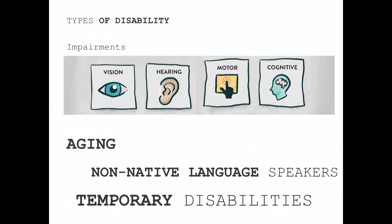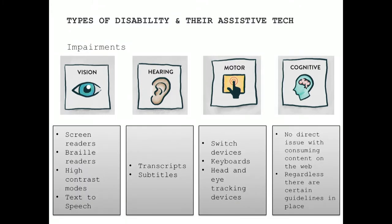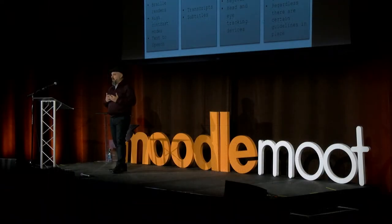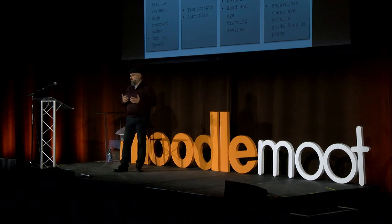There are different categories of impairment that include vision impairment, hearing impairment, motor impairment, and cognitive impairments. In this session we will be focusing on visual impairments and how we can make our learning material and Moodle more accessible — specifically how we can make our themes and custom pages more accessible.